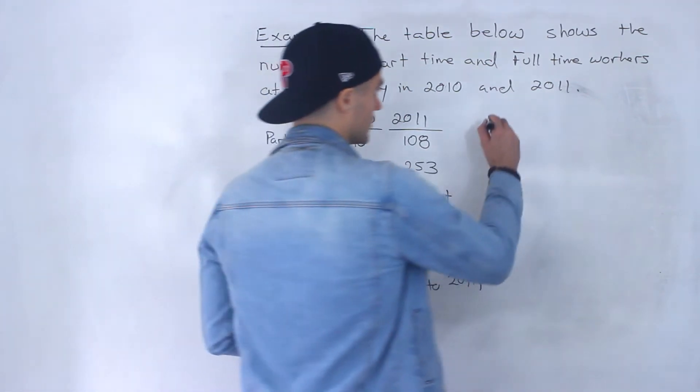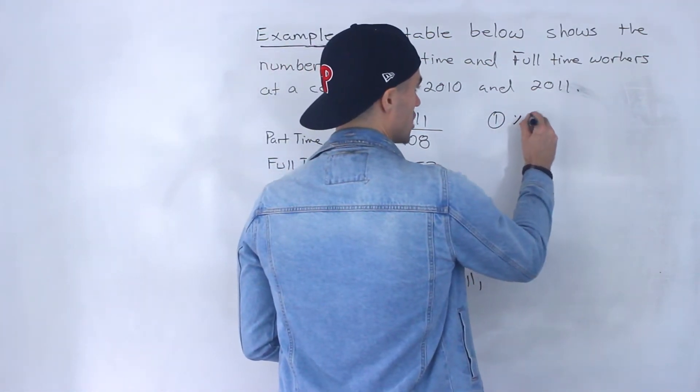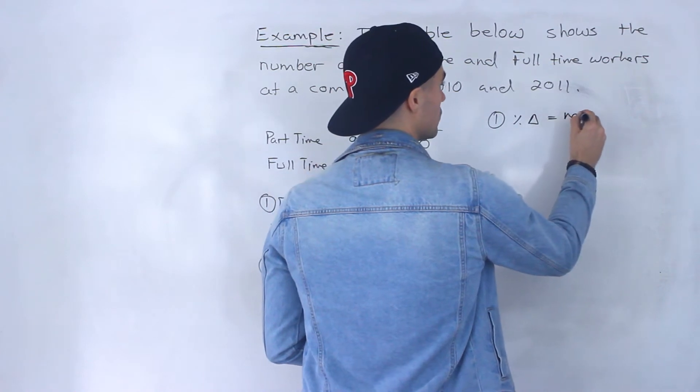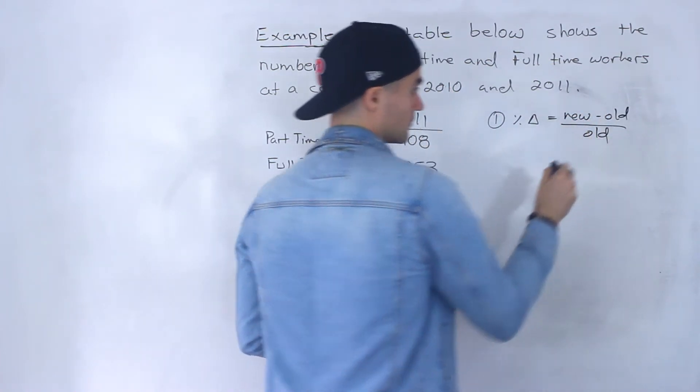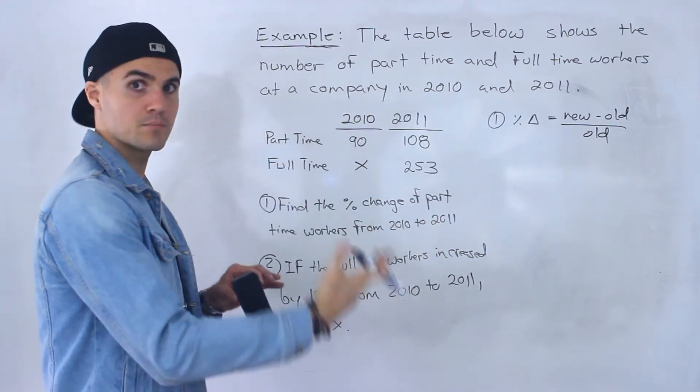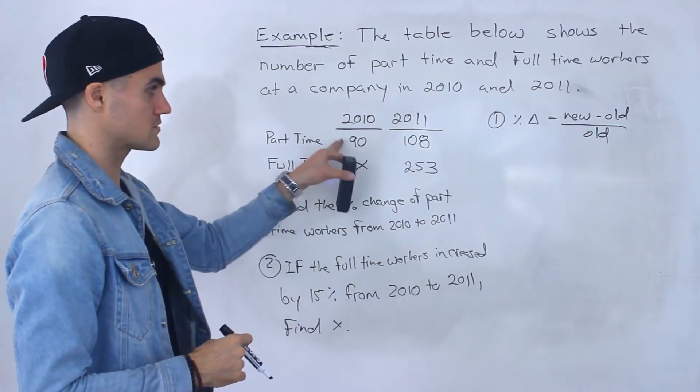So for number one, just in general, the percentage change in anything is always the new value minus the old value all over the old value. You always divide it by the base that you're working from.